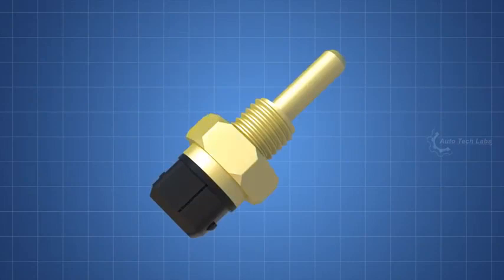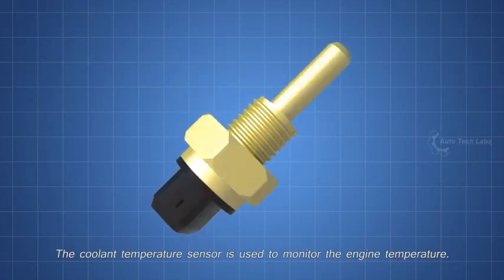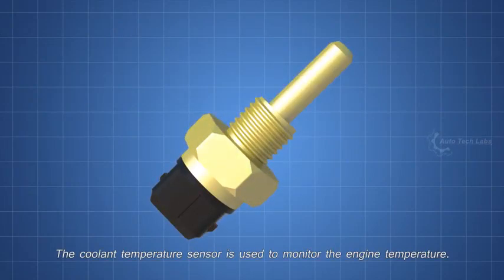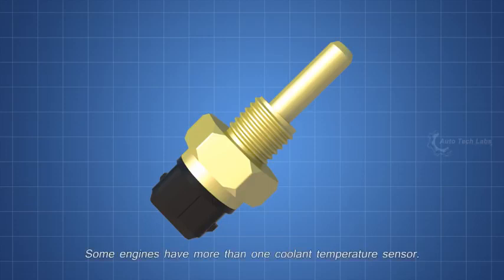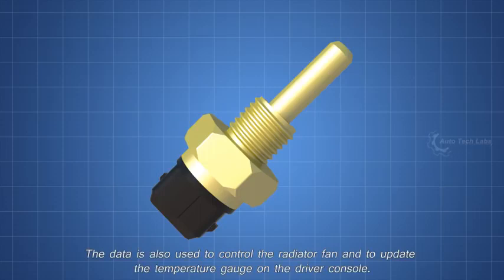Next, the coolant temperature sensor. The coolant temperature sensor is used to monitor the engine temperature. The ECU will use this data to manage fuel injection and ignition time. Some engines have more than one coolant temperature sensor. The data is also used to control the radiator fan and to update the temperature gauge on the driver console.